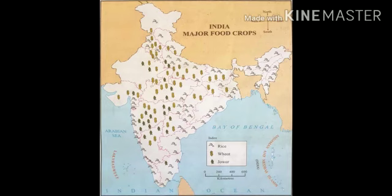Food crops grown in North India: mainly wheat is grown, and rice to a lesser extent. And the major food crops grown in the central region — the area between the map regions — the crop grown there is wheat. I hope you all understand this map.